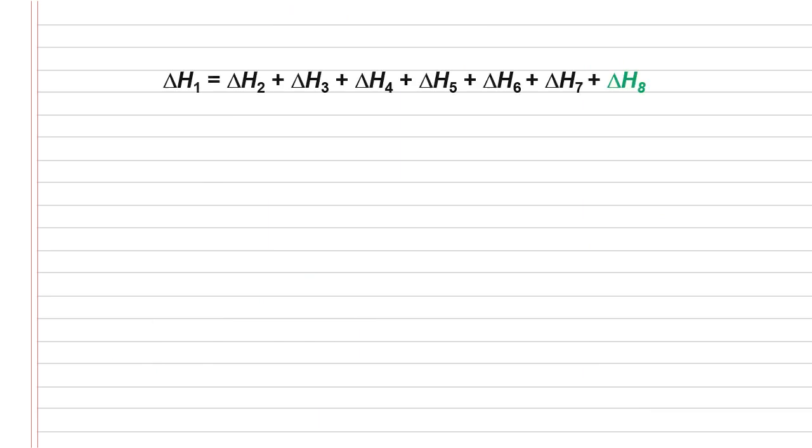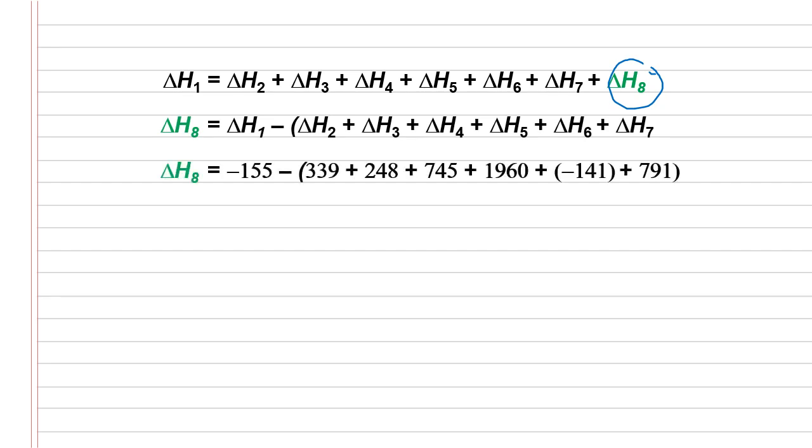Delta H1 is equal to delta H2 until delta H8. We want to find the delta H8. So rearrange them and then substitute the value. Lastly, you're going to get the final answer of negative 4097 kilojoule per mole.